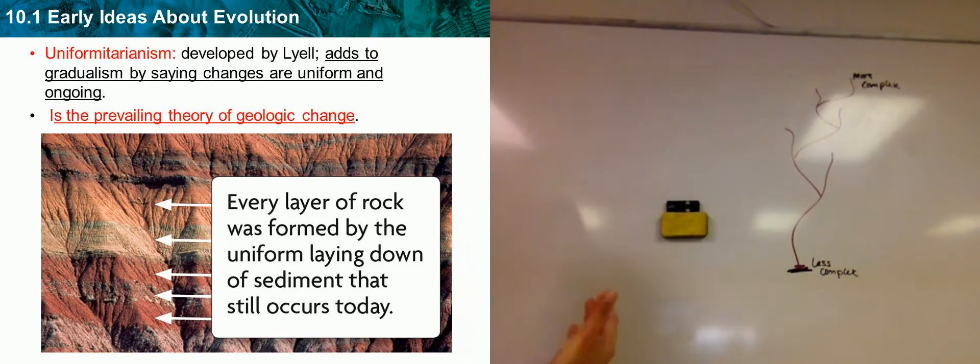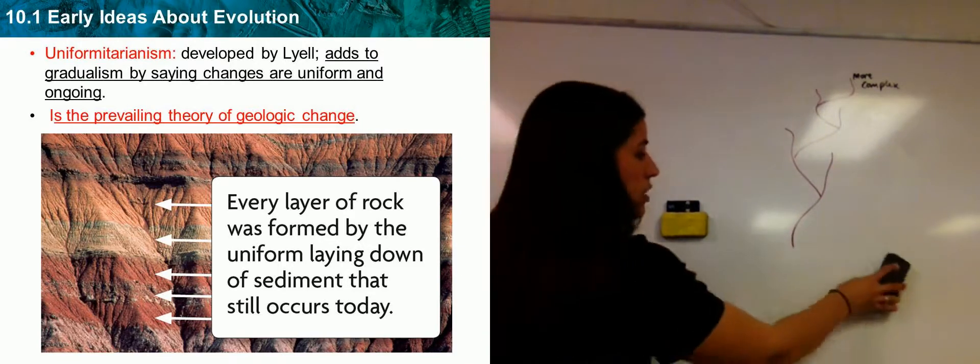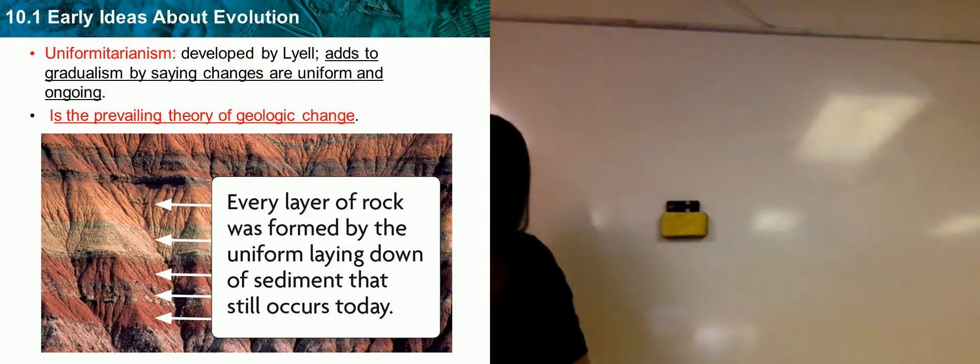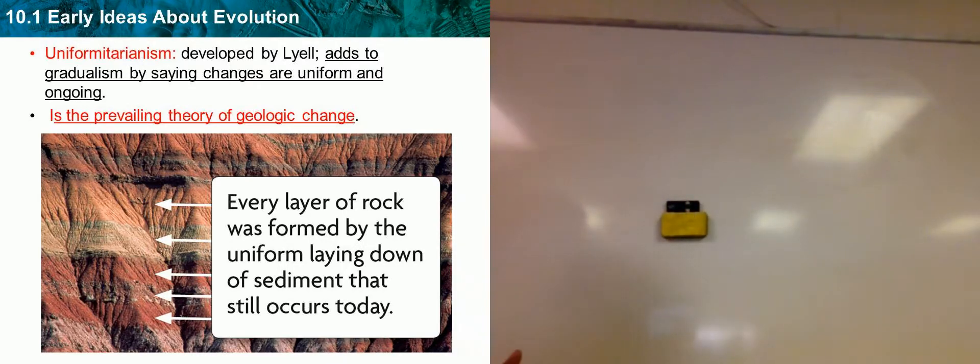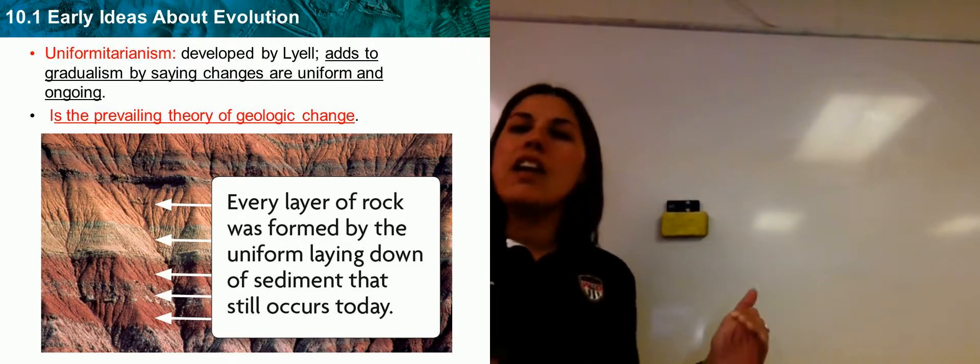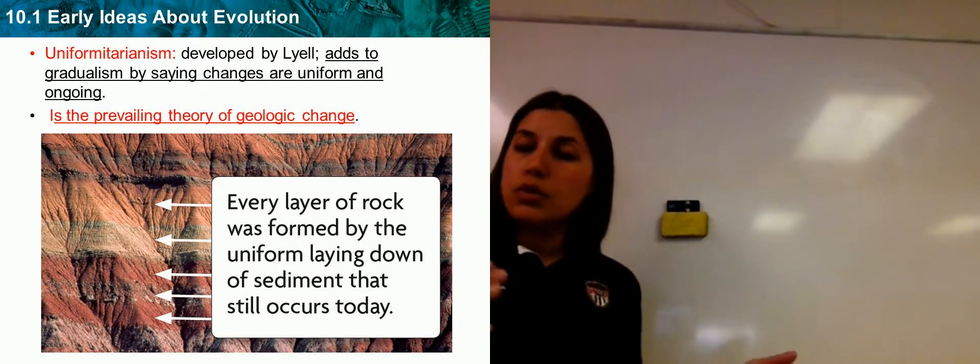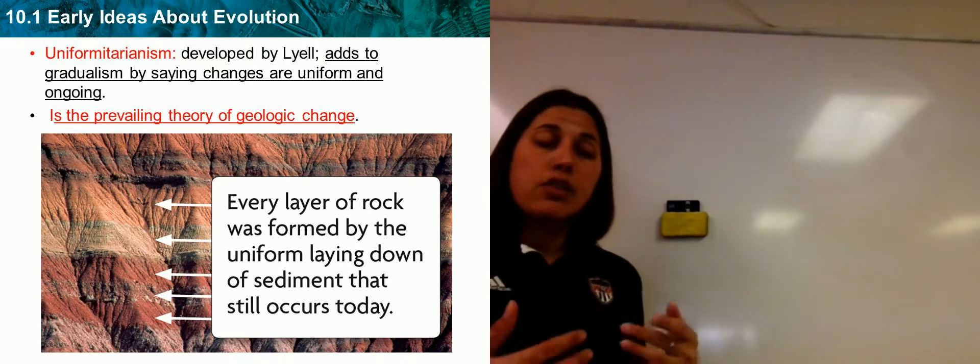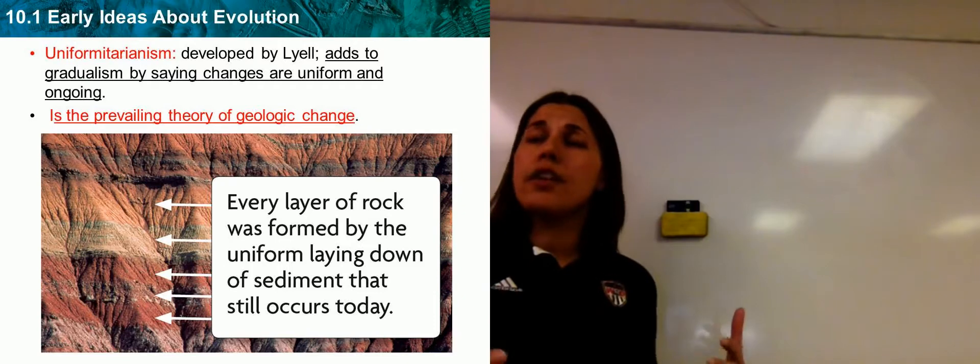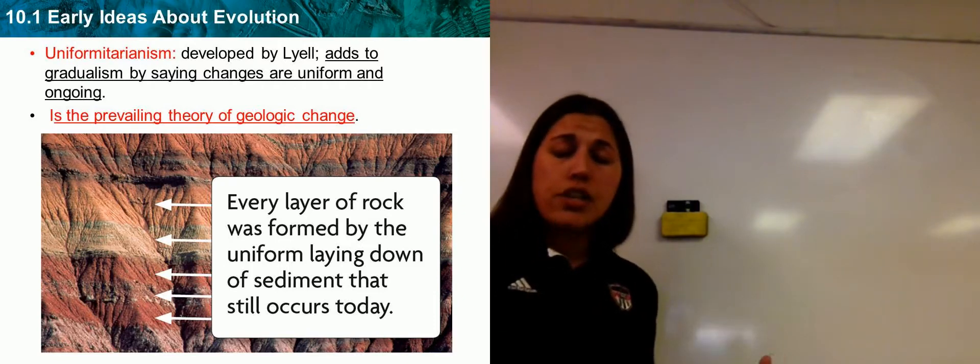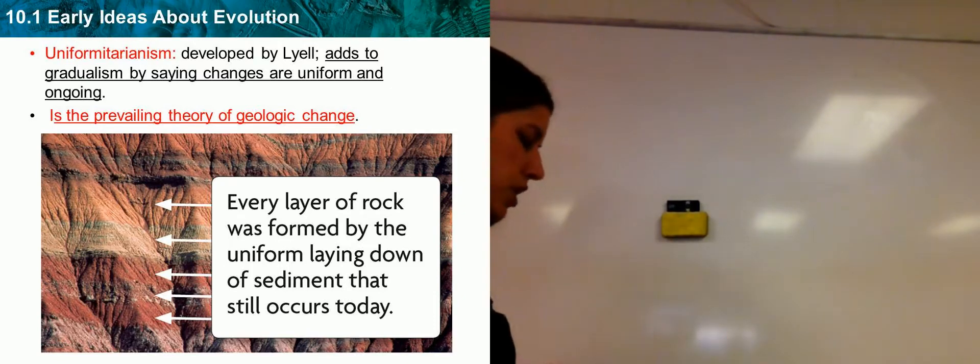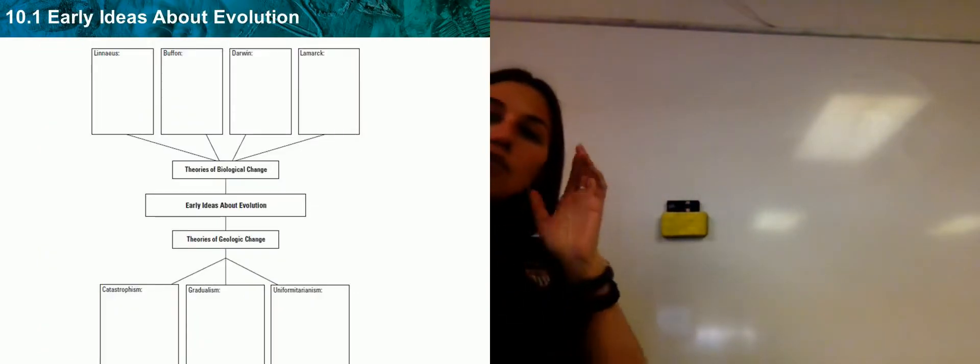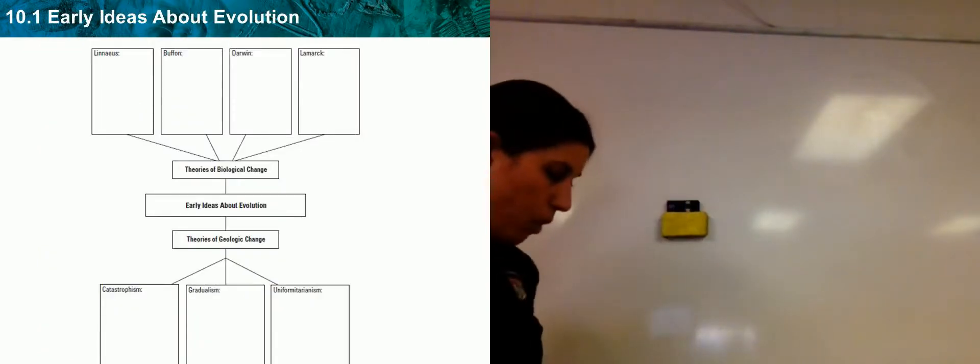Truthfully, that is section one. Section one doesn't have a lot to it. It just introduces the theories of geologic change and introduces the scientists that gave way to Charles Darwin, who we'll talk about in section two and every section from here on out. Because Charles Darwin is that father figure of natural selection. He kind of ties the word evolution together. So, the last thing I want us to go through and recap is just the power notes from 10.1.